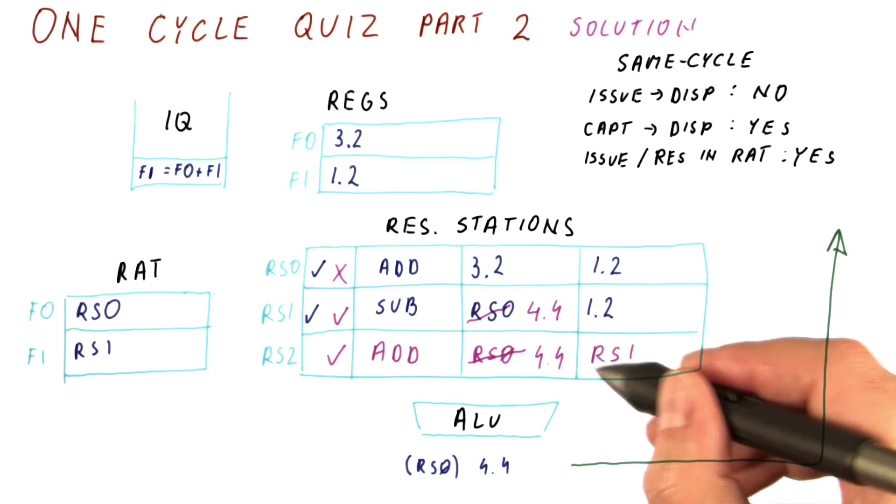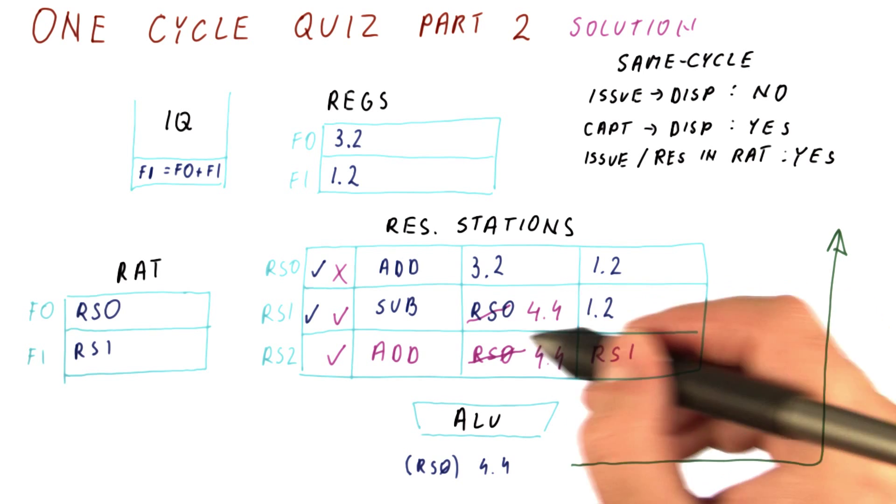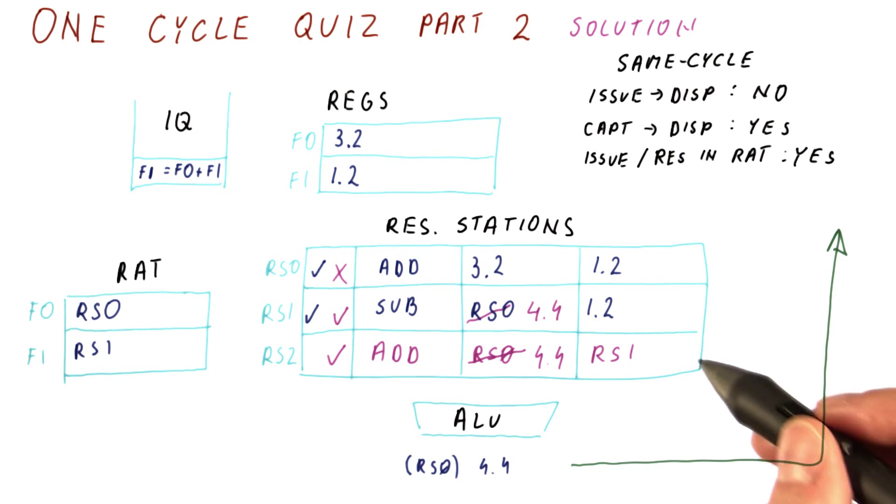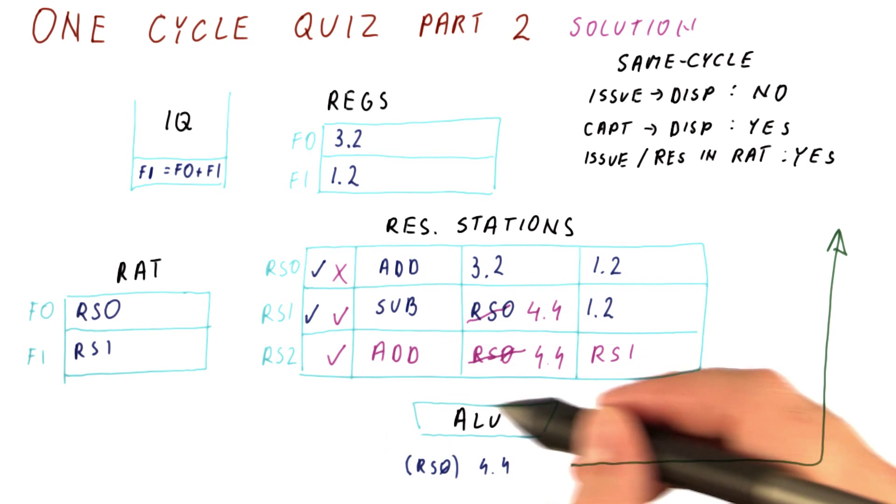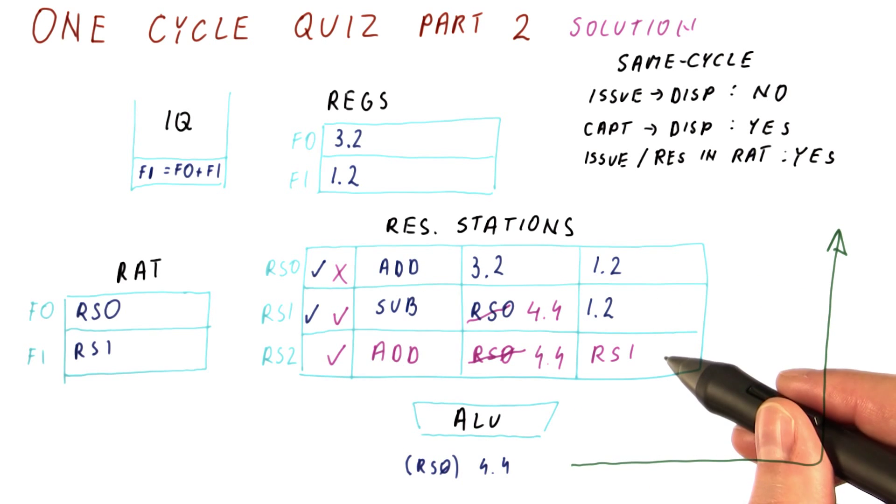This instruction is still waiting for RS1, and that's fine, RS1 hasn't executed yet. So this is all that happens to reservation stations as a result of things that happen in this cycle.